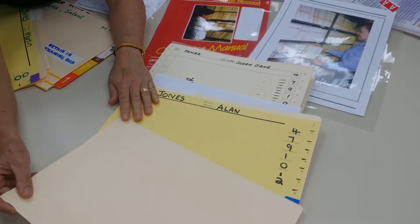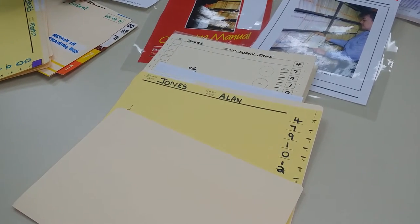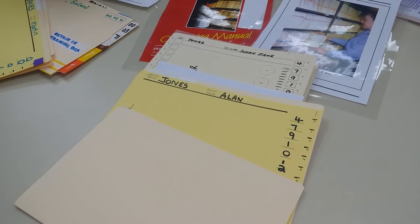And his number would be preceded by a 2 because he's the second member of the family to have attended the practice.